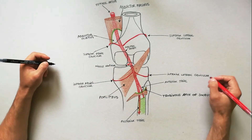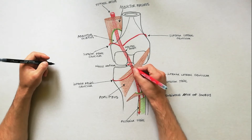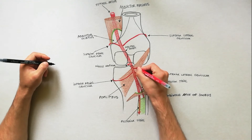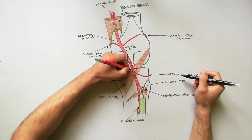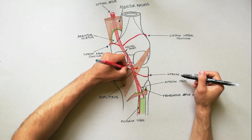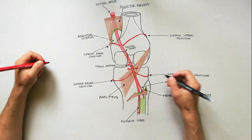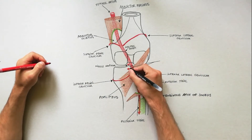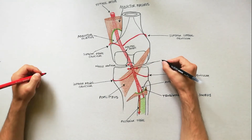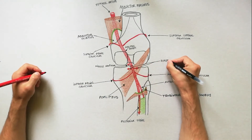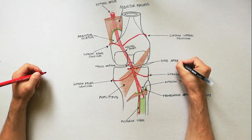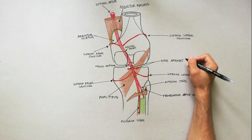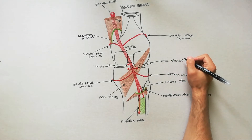Apart from these genicular branches, the popliteal artery also gives rise to the sural arteries — two large branches, lateral and medial — which are distributed to the gastrocnemius, soleus, and plantaris muscles.